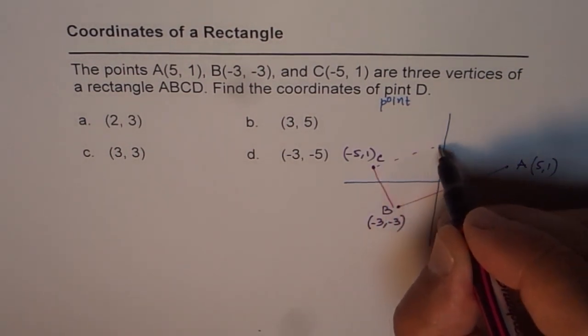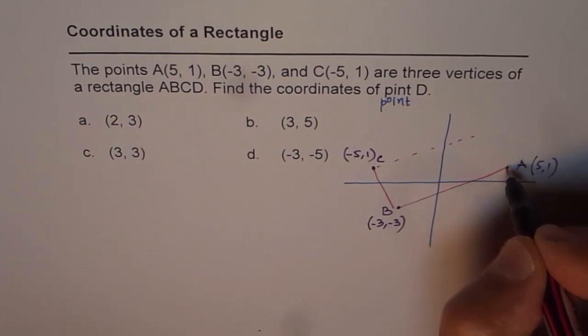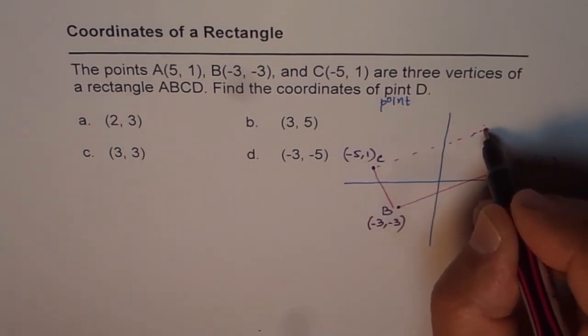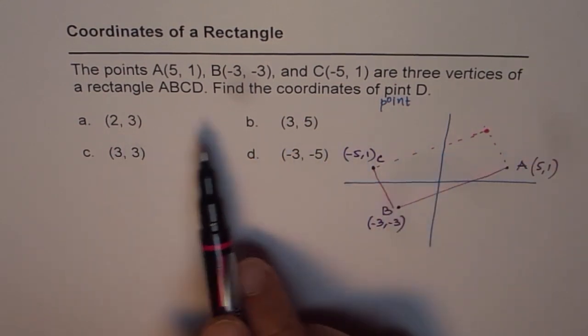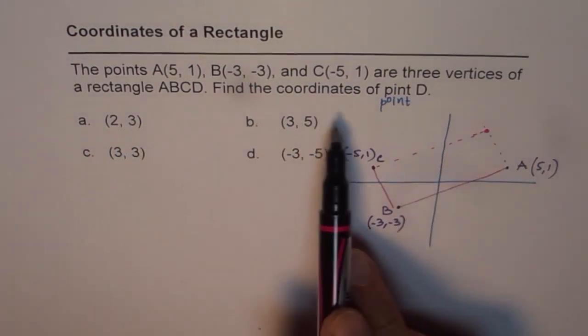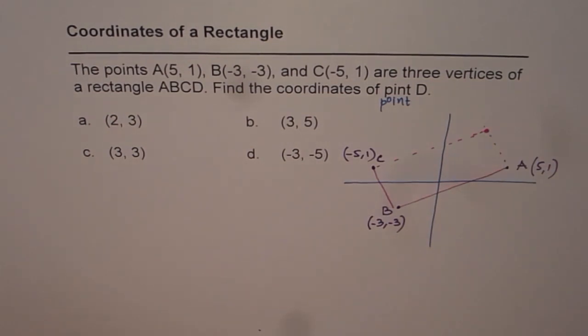So obviously that point is somewhere here, a line parallel to AB, and then a line parallel to BC should give us the point, right? Well, from the multiple choice questions, we can rule out the last one. Any of these could be possible. How do we get that point? That is really the question.